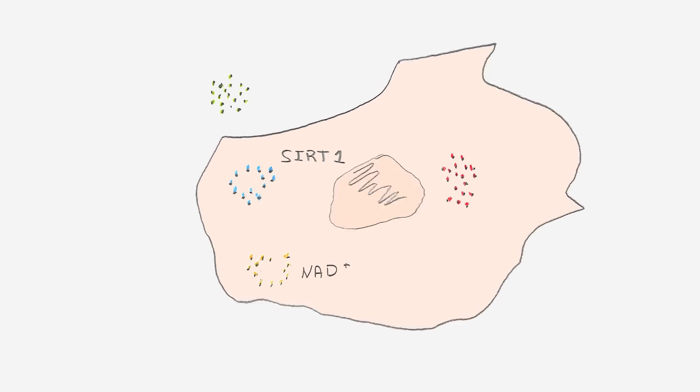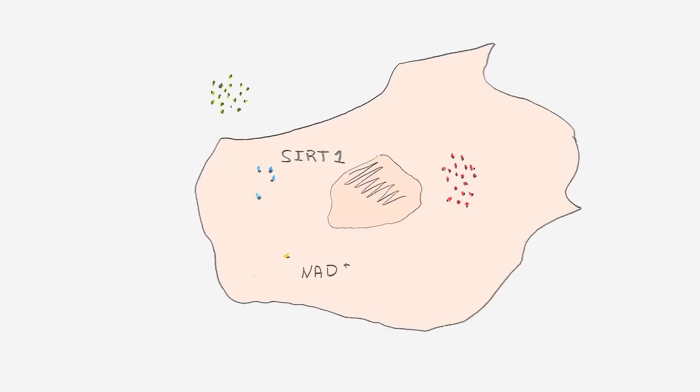But both NAD and SIRT1 decline as we age. They can no longer perform their role as the interface between the muscles and blood vessels.